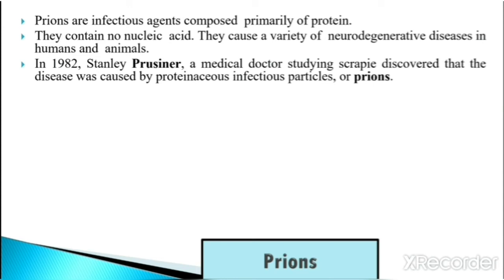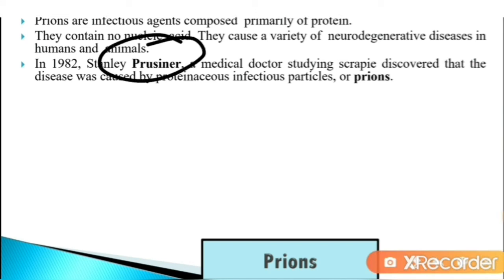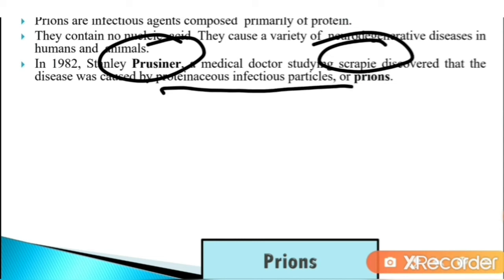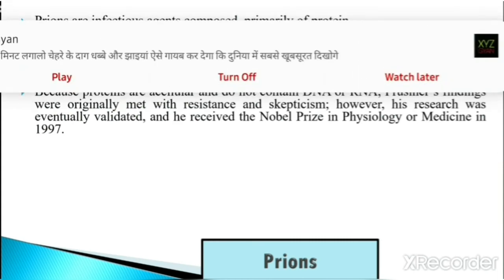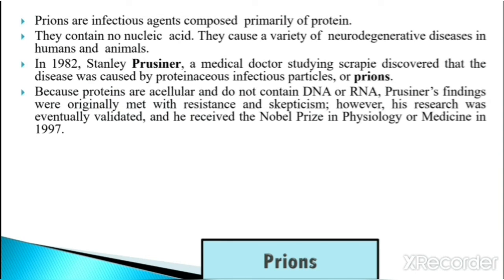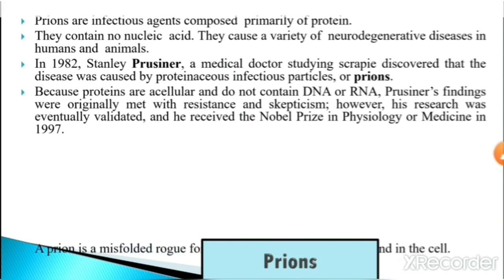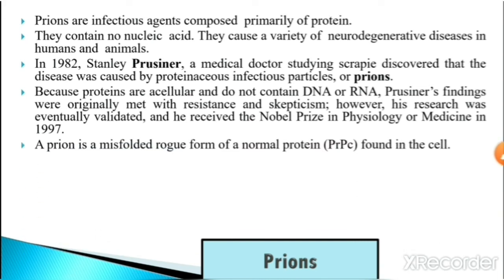In 1982, Stanley Prusiner, a medical doctor studying scrapie, discovered that the disease was caused by proteinaceous infectious particles, or prions. Because proteins are acellular and contain no DNA or RNA, his findings were originally met with resistance and skepticism. However, his research was eventually validated and he received the Nobel Prize in Physiology or Medicine in 1997.